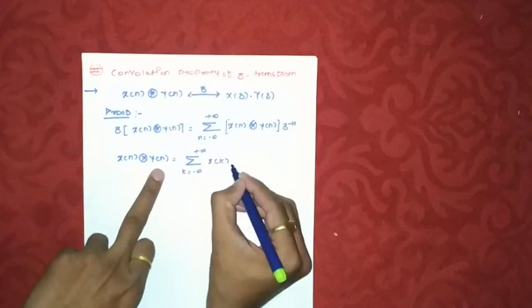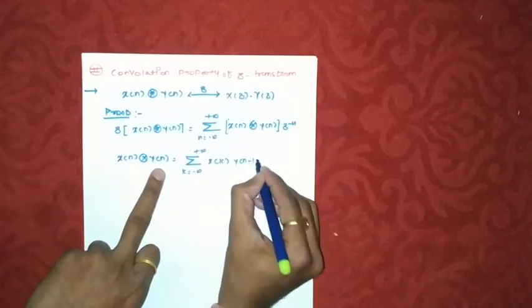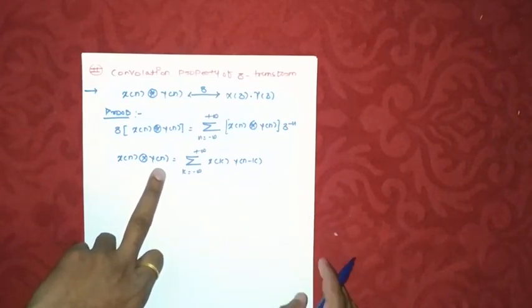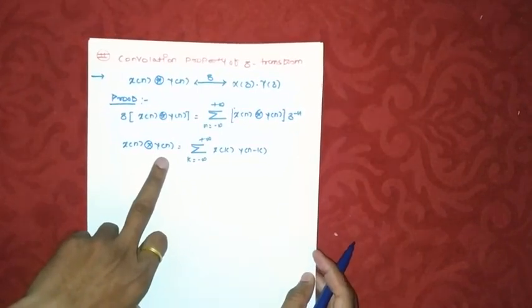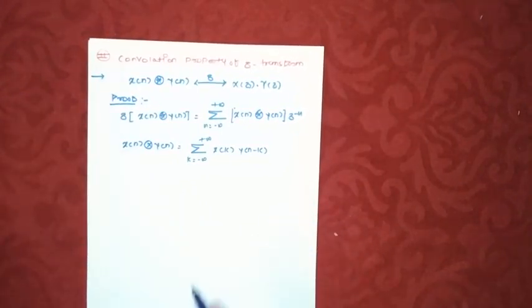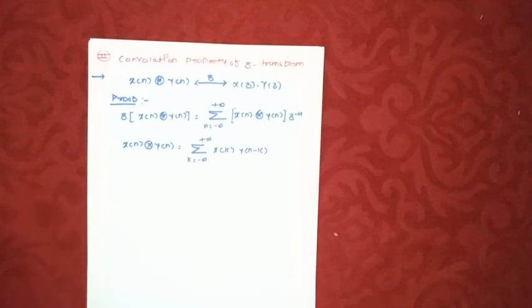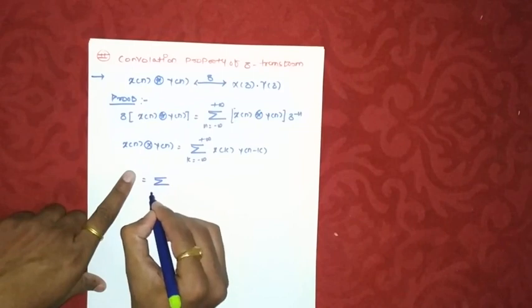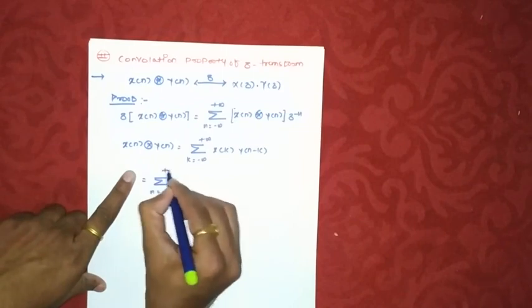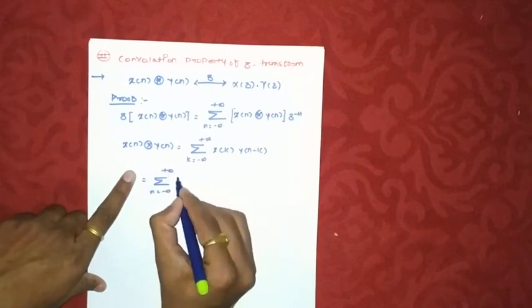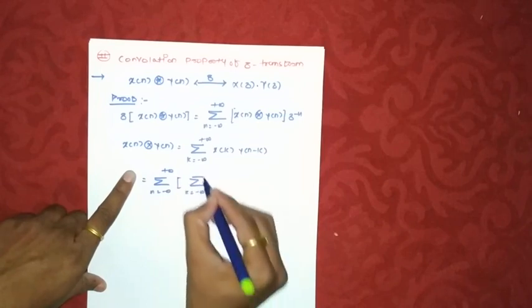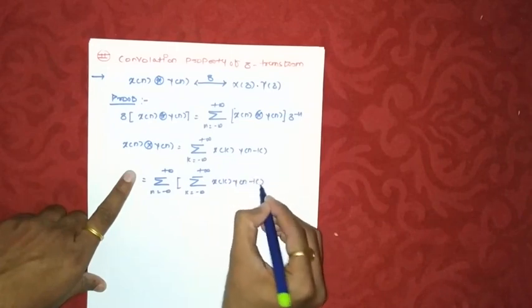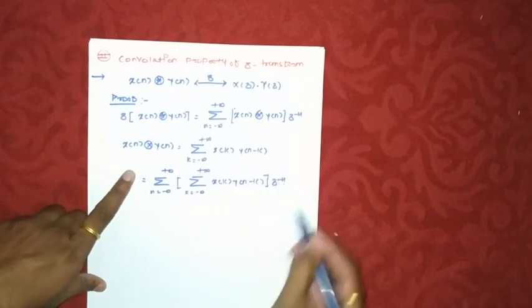This is summation k from minus infinity to plus infinity x of k into second signal shifted by some units or some delays as y of n minus k. This is the output of an LTI system and this is known as linear convolution also. Now if I replace this value here, we will get this equation as summation n minus infinity to plus infinity, then summation k minus infinity to plus infinity x of k into y of n minus k into z raised to minus n.